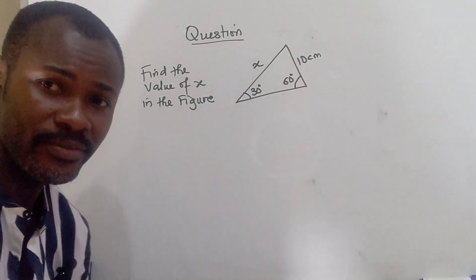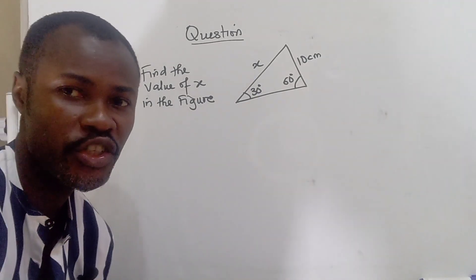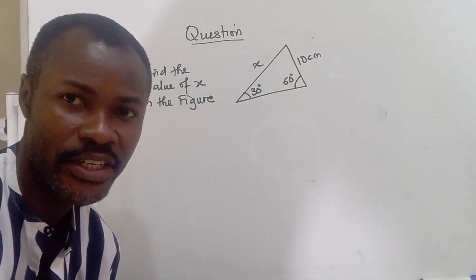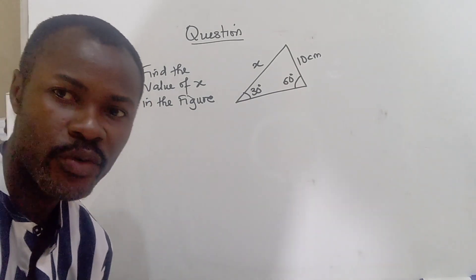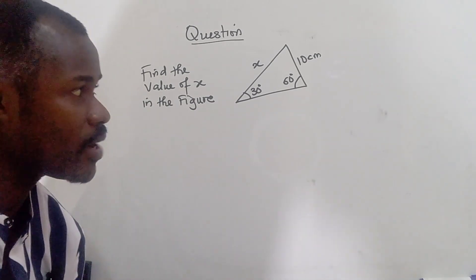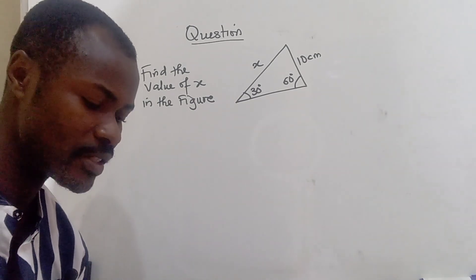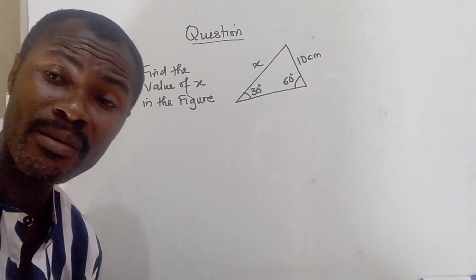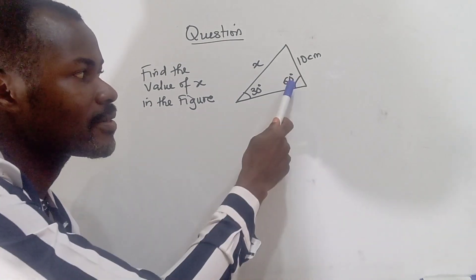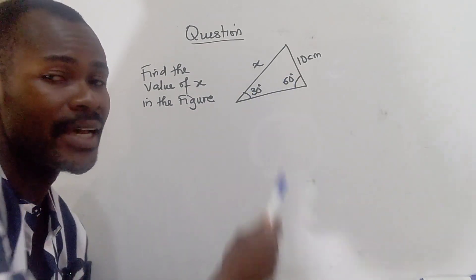We have a triangle shape here, and the question says find the value of x in the figure. So how do we solve this? Now let's look at the triangle and examine the triangle. The sum of angles in the triangle is always equal to 180, and we have 60 here, we have 30 here.